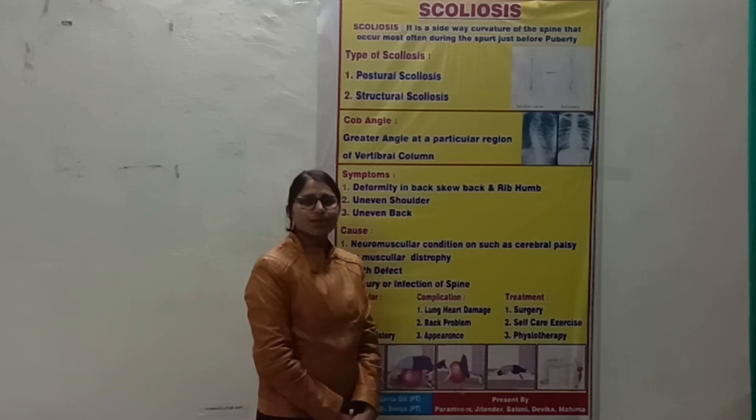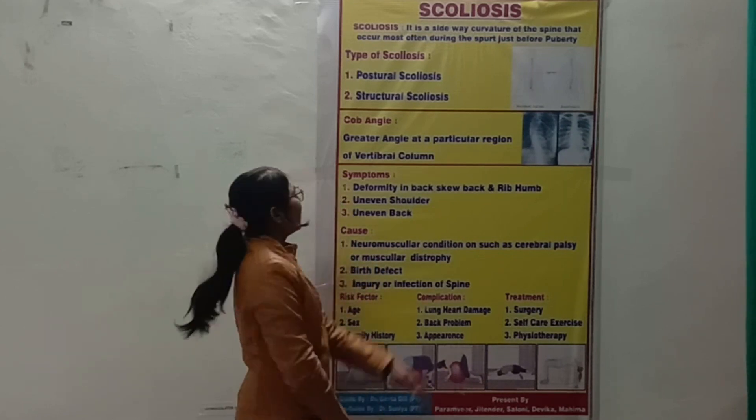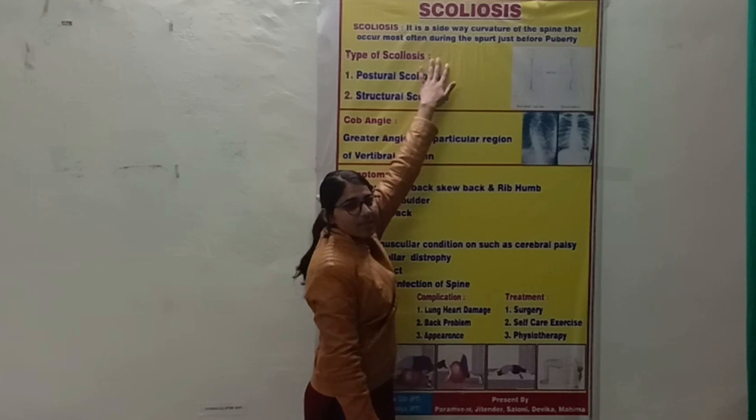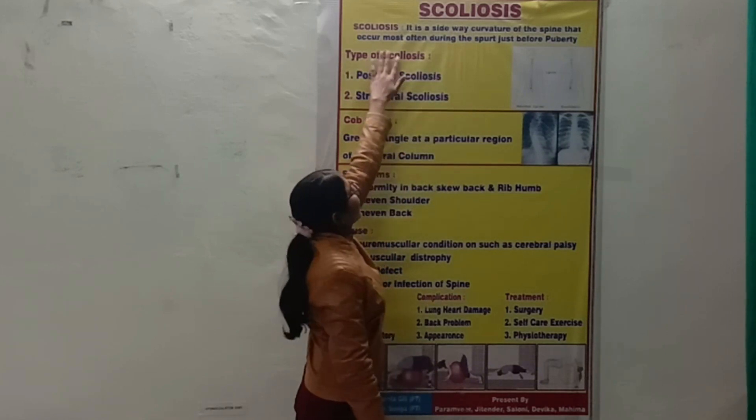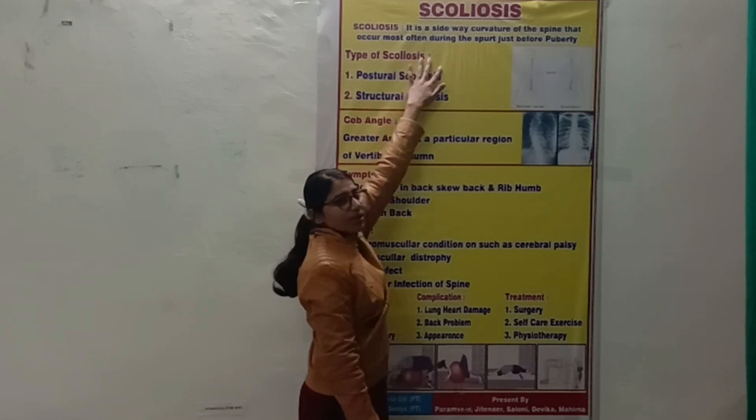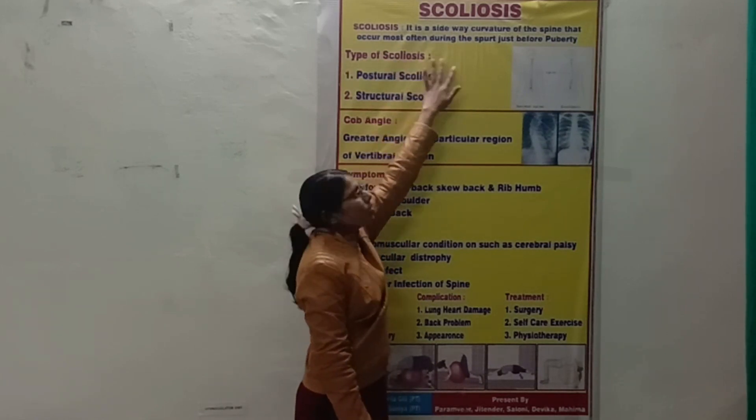What is scoliosis? It is the sideways curvature of the spine that occurs most often during the growth spurt just before puberty.